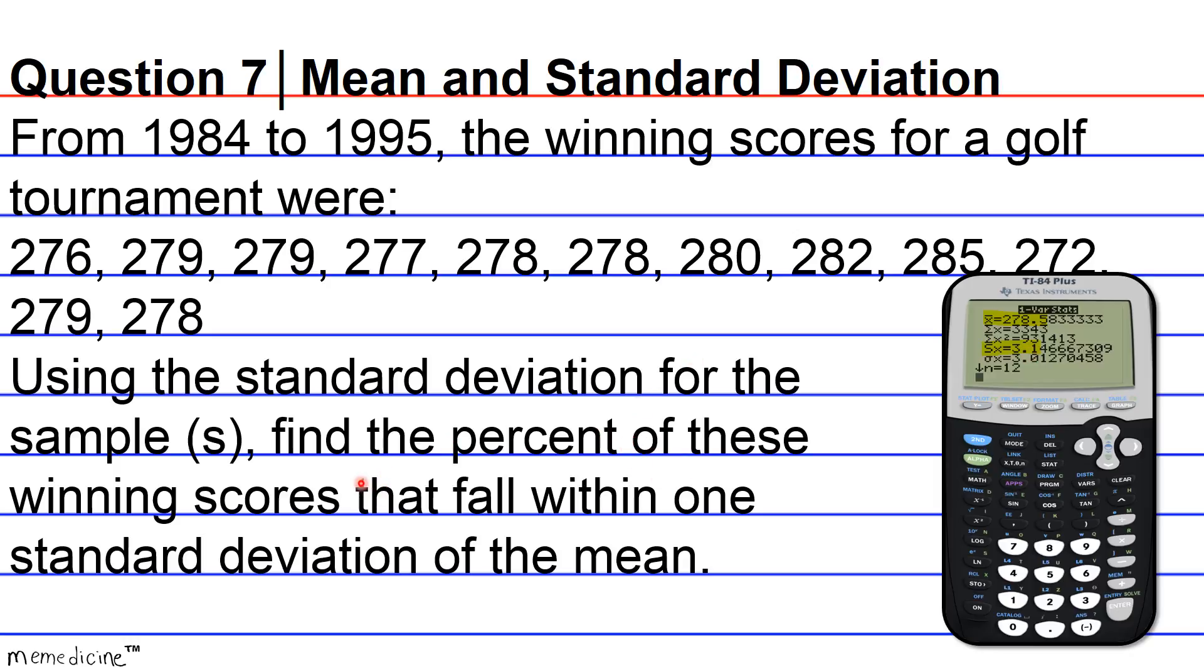Now to answer the actual question: finding the percent of these winning scores that fall within one standard deviation from the mean. We have our mean and our standard deviation. This interval includes one standard deviation in the negative direction and one in the positive direction. We get x-bar minus one standard deviation to x-bar plus one standard deviation. Filling in the values: 278.6 - 3.1 to 278.6 + 3.1, which equals 275.5 to 281.7. Here's our interval of interest.